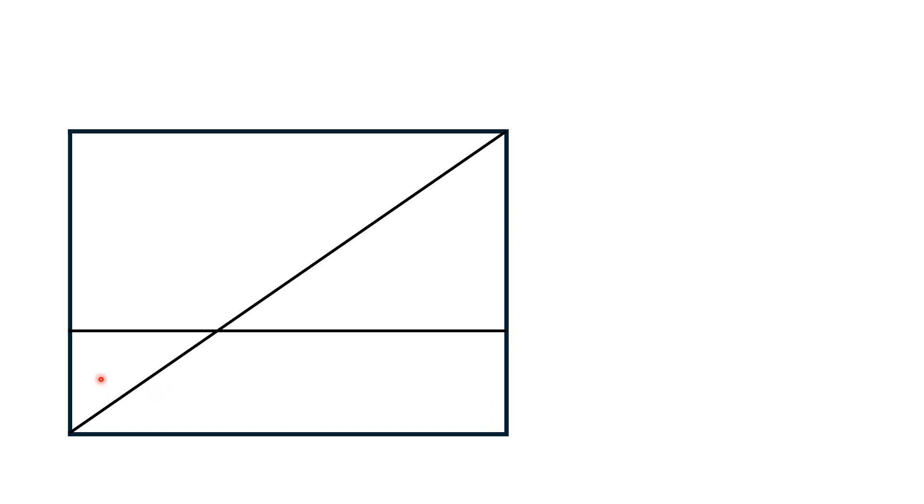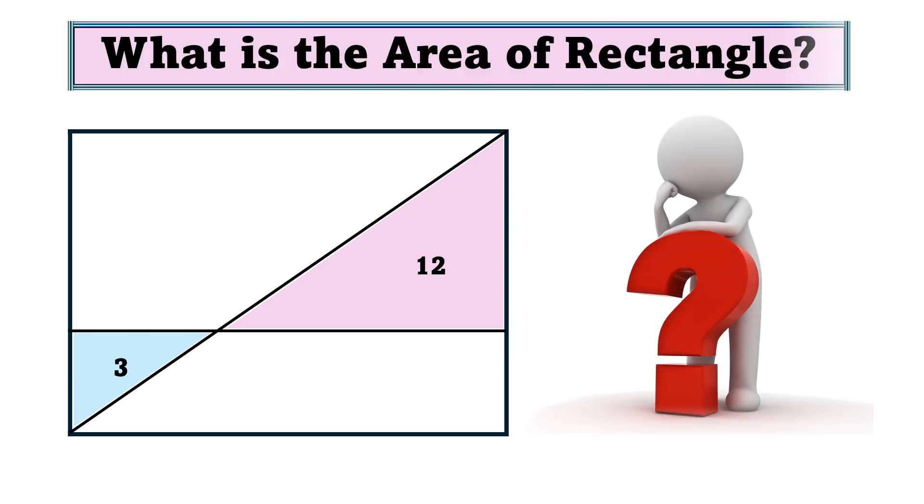Then this portion is a right triangle having area equal to 3 square units, and this portion is again a right triangle having area equal to 12 square units. With this limited data, we have to find the area of the rectangle.